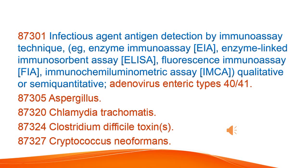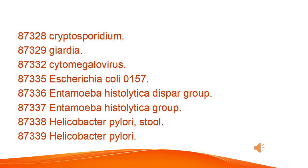Infectious agent antigen detection by immunoassay technique — e.g., Enzyme immunoassay (EIA), enzyme-linked immunosorbent assay (ELISA), fluorescence immunoassay (FIA), immunochemiluminometric assay (IMCA) — qualitative or semi-quantitative: Adenovirus enteric types 40–41, Aspergillus, Chlamydia trachomatis, Clostridium difficile toxin, Cryptococcus neoformans, Cryptosporidium, Giardia, Cytomegalovirus, Escherichia coli O157, Entamoeba histolytica dispar group, Entamoeba histolytica group, Helicobacter pylori stool.